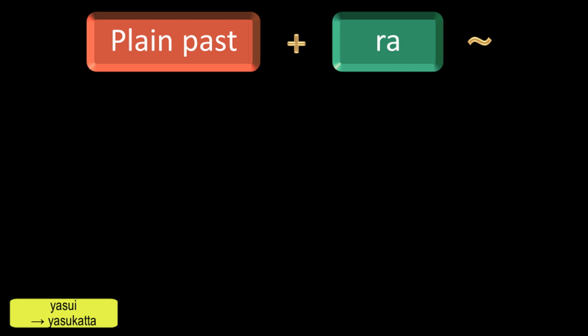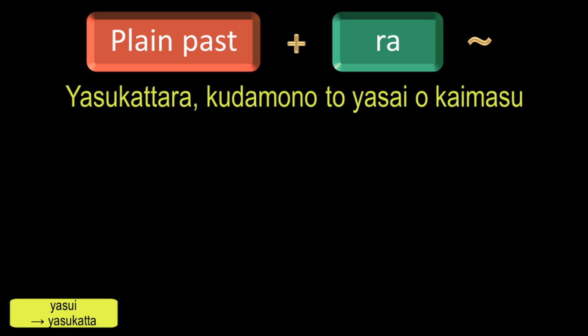And to say 'if they are inexpensive, I will buy fruits and vegetables,' in Japanese it will be: Yasukattara Kudamono to Yasai wo Kaimasu. Here, Kudamono means fruits, Yasai means vegetables, and Kaimasu means to buy.